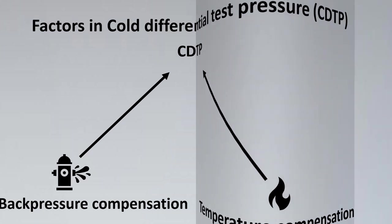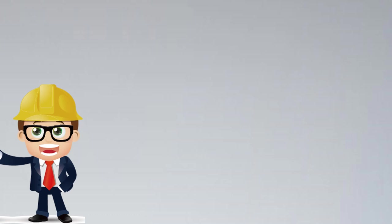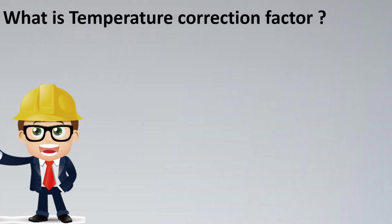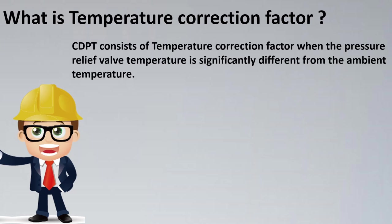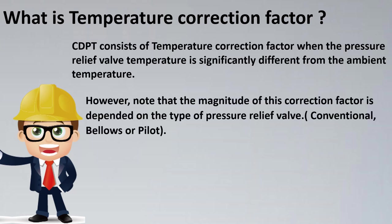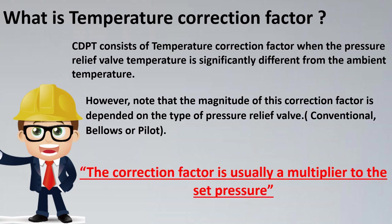We will first look into the temperature part. Imagine the temperature where the relief valve has to operate is 80 degrees Celsius, while at the test stand the temperature would be ambient. This difference in temperature leads to an effect where the pop-up of the relief valve will happen at a different pressure, and this needs to be compensated. Note that the magnitude of the correction factor depends on the type of relief valve selected — conventional, bellows, or pilot — as each would have a different multiplier for the temperature correction factor.